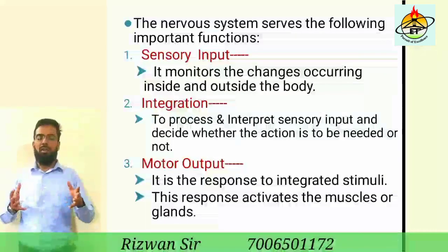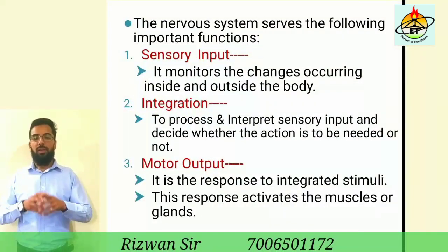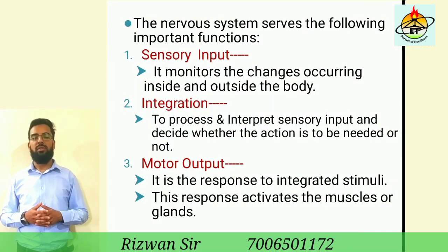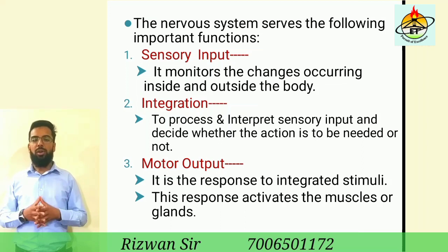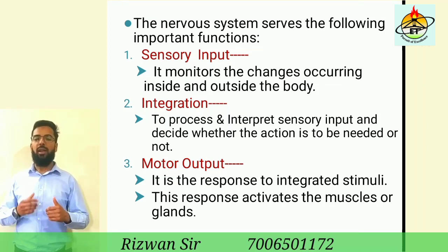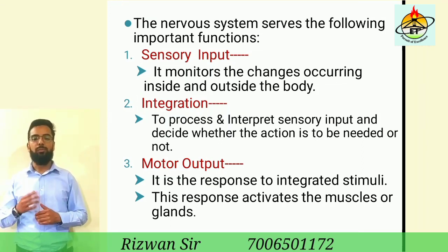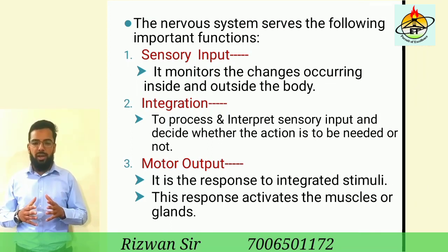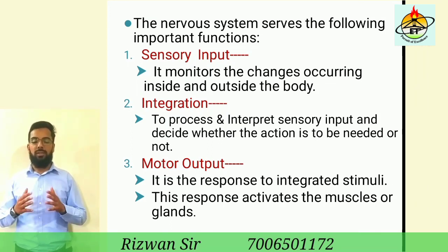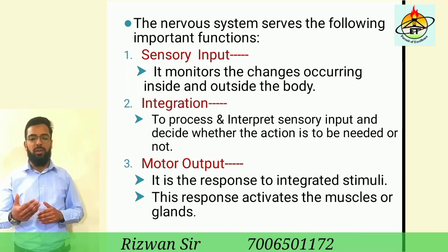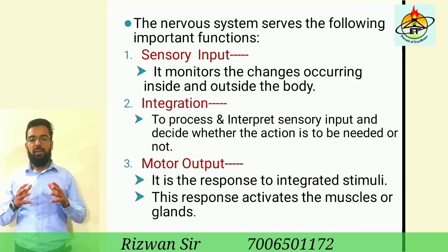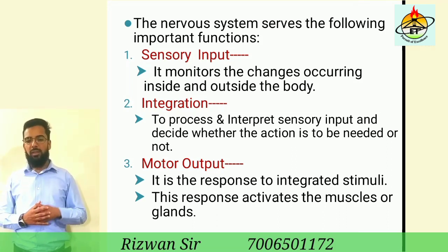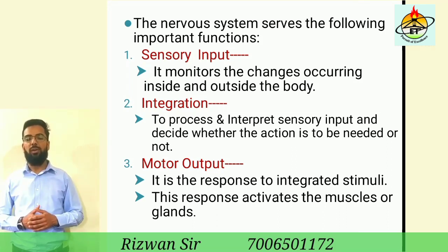What are the functions of the nervous system? The nervous system serves the following important functions. Number 1: Sensory input, which means gathering information — it monitors the changes occurring inside and outside the body. Number 2: Integration, which means to process and interpret sensory input and decide whether action is needed or not. Number 3: Motor output — it is the response to integrated stimuli, and this response activates the muscles or glands.